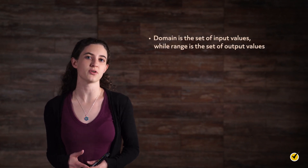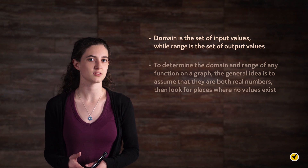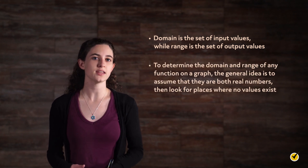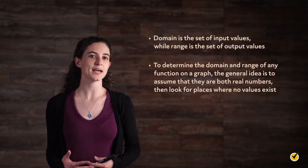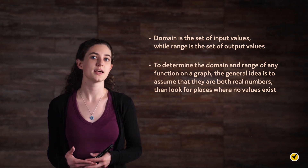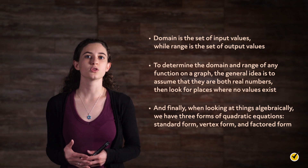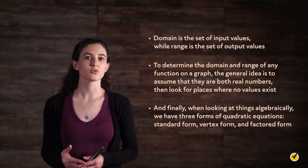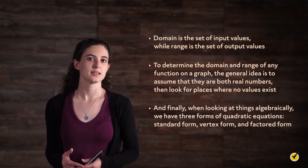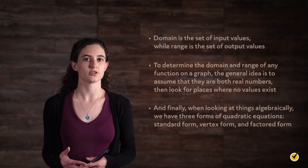Let's do a quick review before we go. Domain is the set of input values, while range is the set of output values. To determine the domain and range of any function on a graph, assume they are both real numbers, then look for places where no values exist. When looking at things algebraically, we have three forms of quadratic equations: standard form, vertex form, and factored form. Thanks for watching, and happy studying!